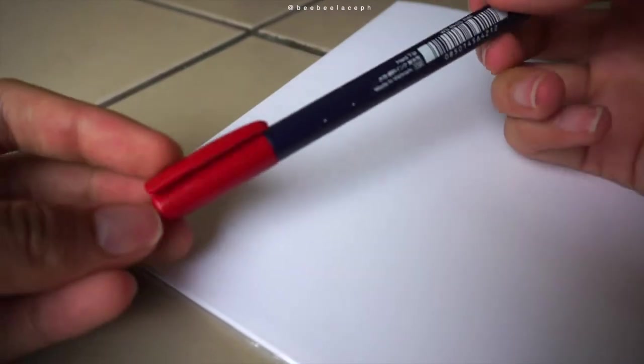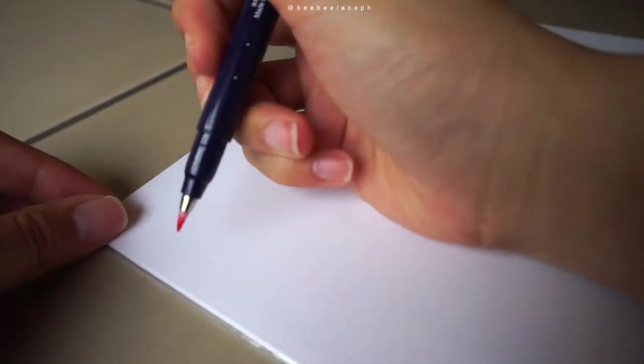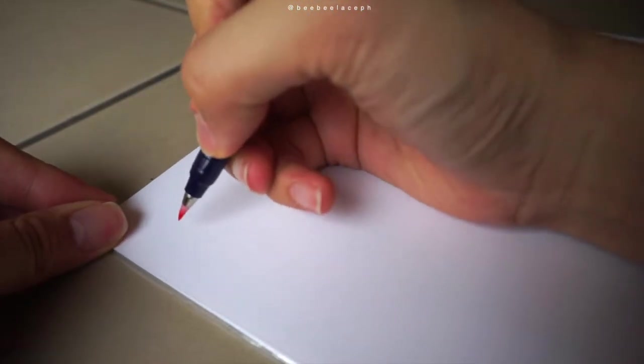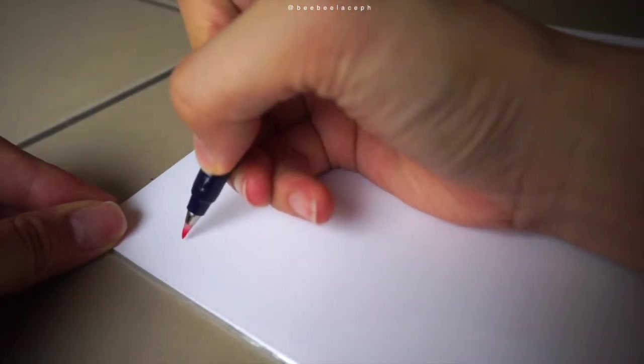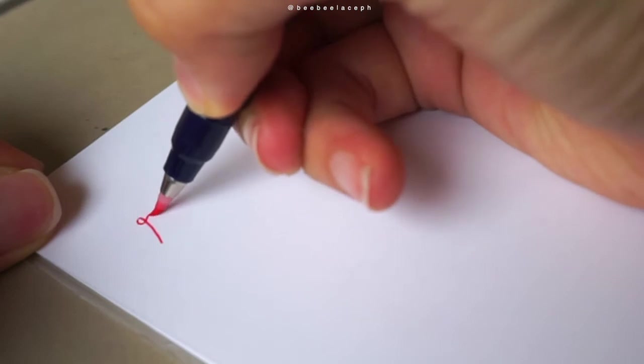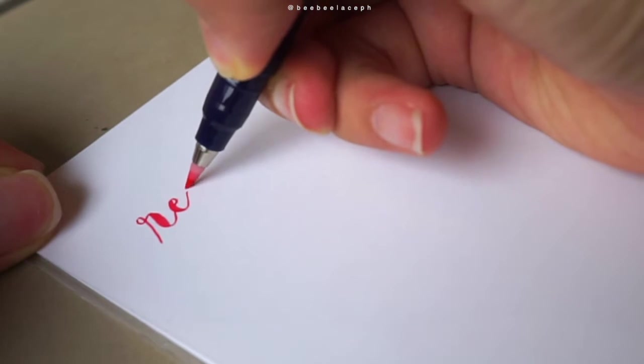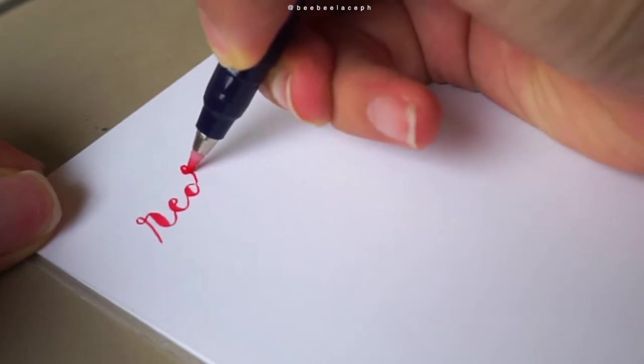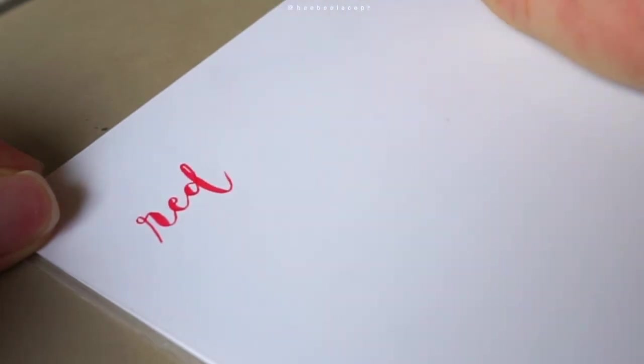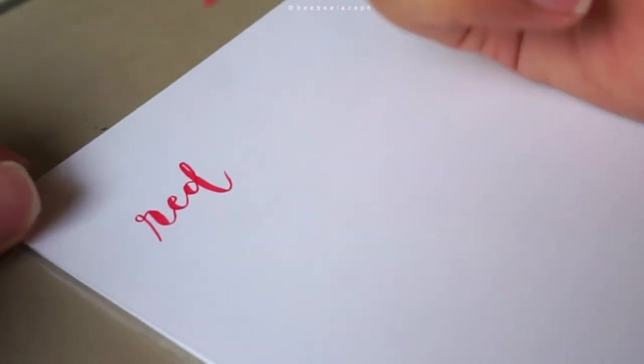And first, we have the color red. So yeah, you can put it on the front, like a normal pen. And this goes really smooth. I really like the Tombow Fudenosuke pens. Because they're really perfect for beginners.